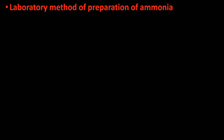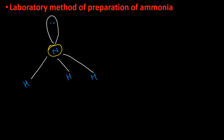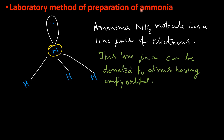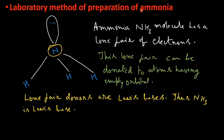Laboratory method of preparation of ammonia: Ammonia's structure was studied in the previous class while discussing the hydrides of Group 15 elements. The central nitrogen atom has three N-H bonds and a lone pair. The presence of the lone pair plays an important role in deciding the properties of ammonia. The lone pair can be donated to atoms having empty orbitals. Lone pair donors are called Lewis bases; thus ammonia is a Lewis base.